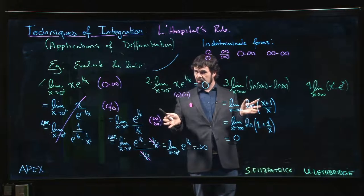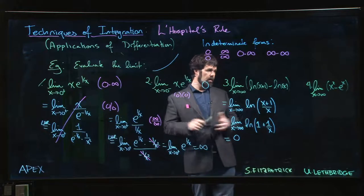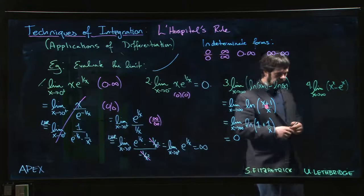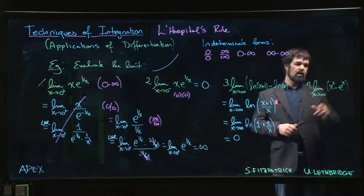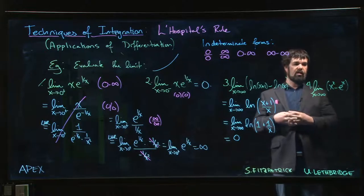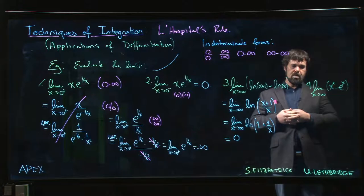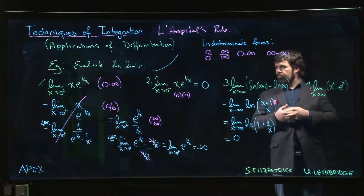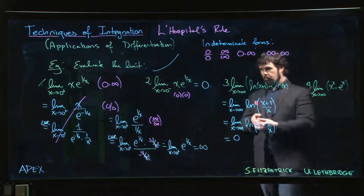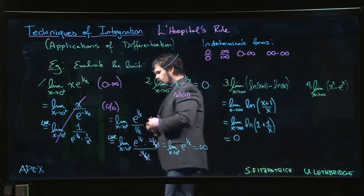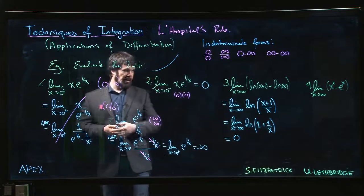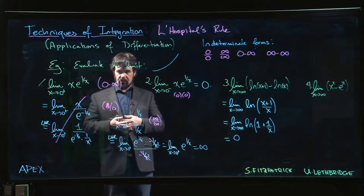That brings us to this last limit: x² minus e^x. We can kind of guess the answer here, right? Once you have some intuition for relative behavior of different functions, and in particular understanding that exponential functions grow faster than any power function—really any polynomial function...